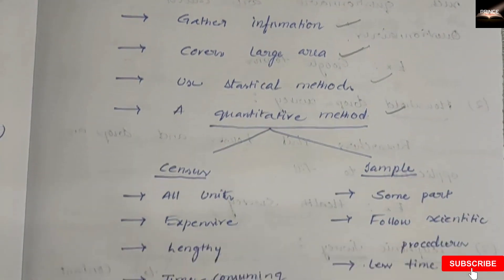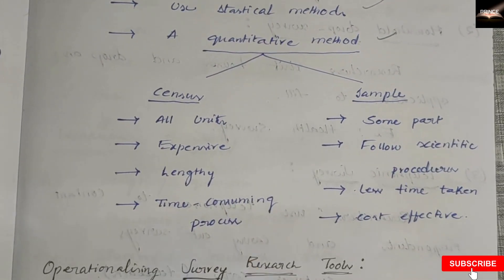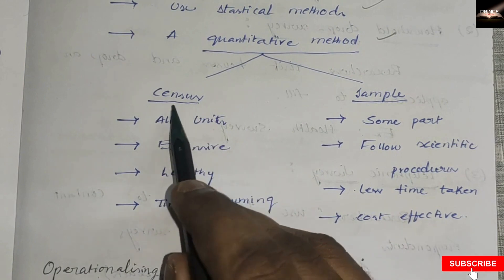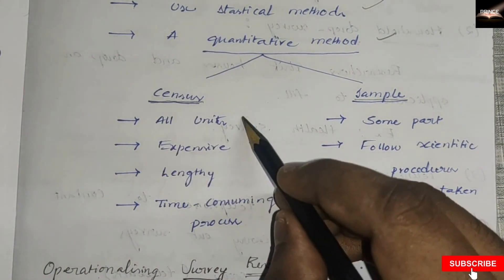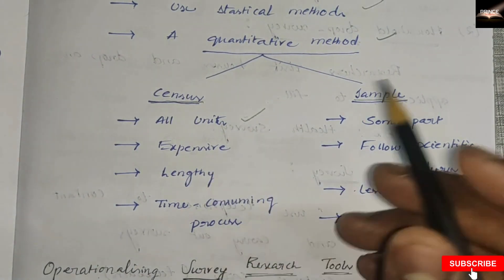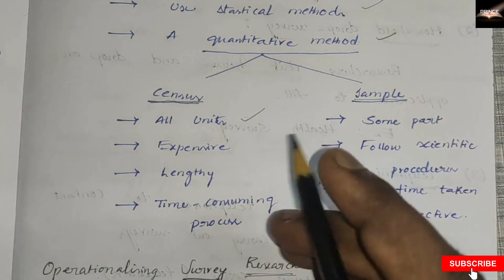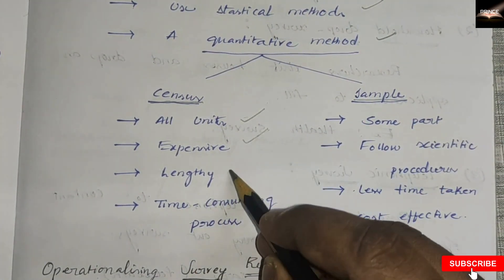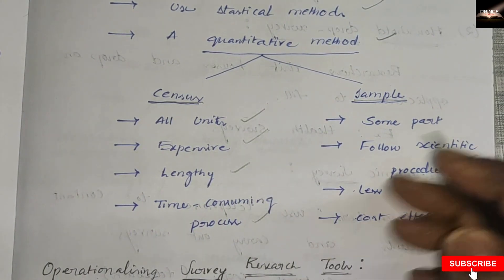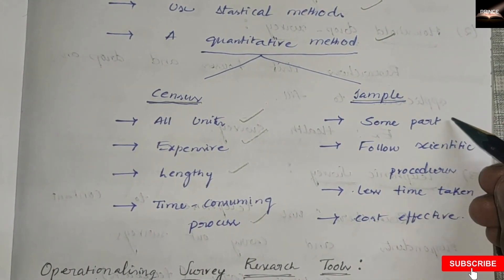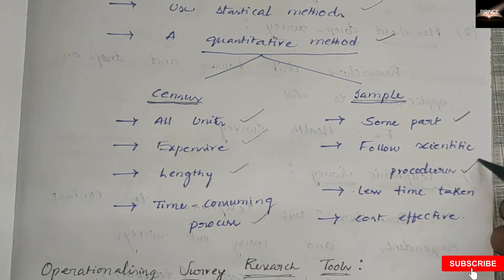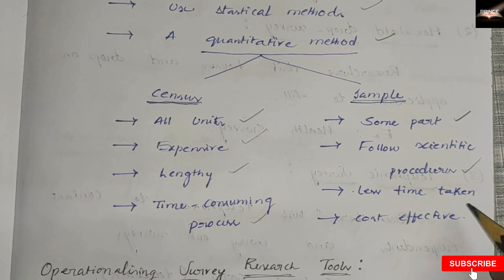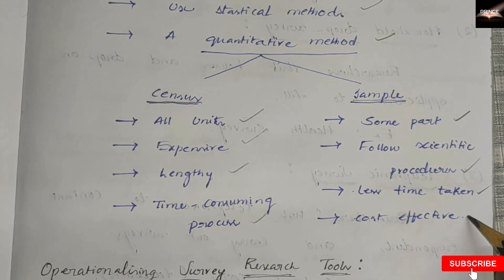Quantitative method is divided into two types: one is the census model and another one is the sample model. The census model covers all the population, all the units in the population, all the area. It is quite expensive, lengthy, and time-consuming. The sample model covers only a portion of the population, follows scientific processes using sampling methods, takes less time, and is very cost effective compared to the census model.